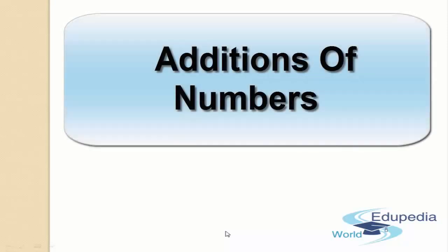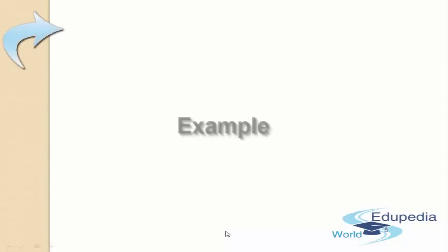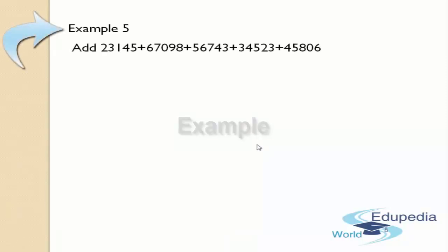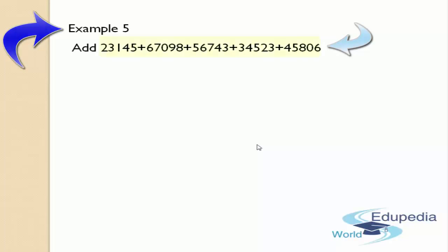Hi everybody, welcome to Edupedia World. In this session we are going to see an example regarding addition of five-digit numbers. We are going to learn how to add five-digit numbers by using the Bindabankana method in Vedic mathematics. Here in example number five, I have taken five-digit numbers: 23145 + 67098 + 56743 + 34523 + 45806.